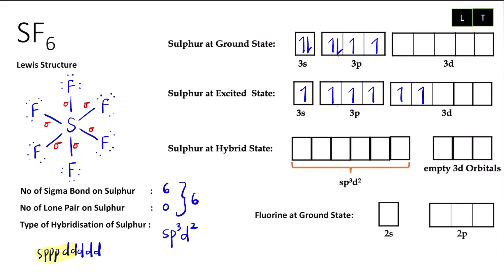Next, I have sulfur at hybrid state, where I will combine or mix the unpaired electrons to get sp3d2. I can label them all at once as sp3d2, where in these orbitals there are 6 unpaired electrons. The other three remaining orbitals have no electrons, so we label them as empty 3d orbitals.